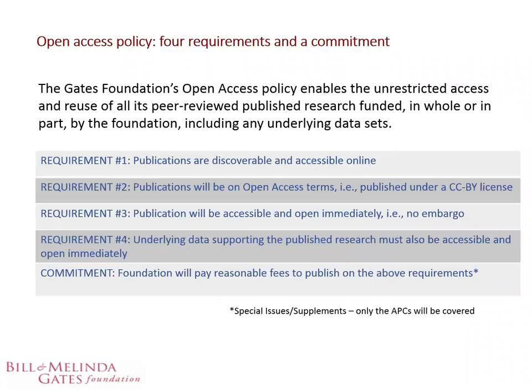What is our open access policy? We like to think of it as four requirements and a commitment. We require that any grantees or sub-grantees publish their research open access — meaning it's discoverable and accessible online on open access terms. Having it published under a CC BY license is really important to us — that is the only license compatible with our policy — and there must be no embargo, so publications need to be accessible and open immediately. We also require that the underlying data supporting the research analysis is made openly available upon publication. Our commitment is that we will pay the reasonable fees to publish on these requirements, so it doesn't come out of your grant budget, and there's no cap on how many articles you produce or when you publish them.